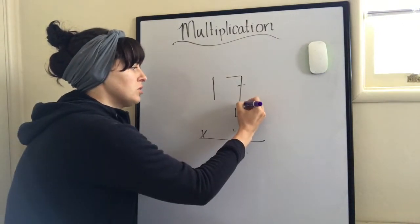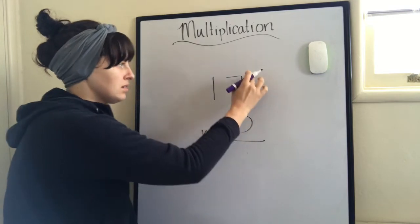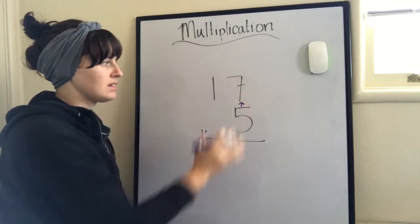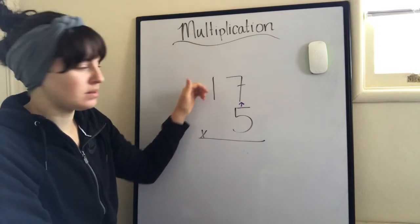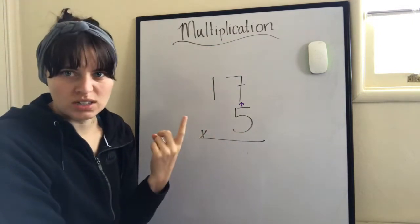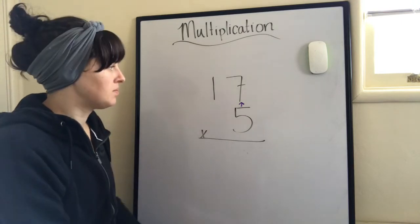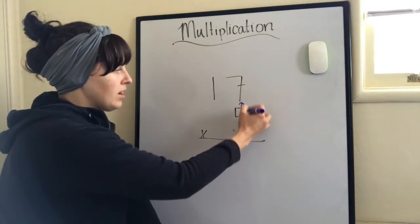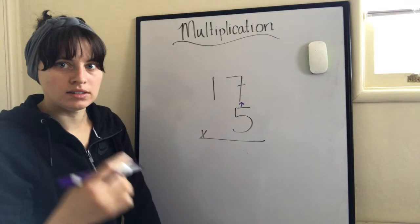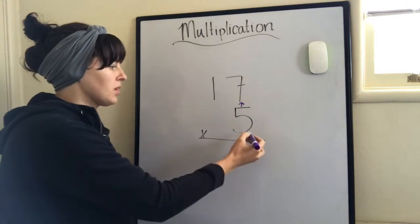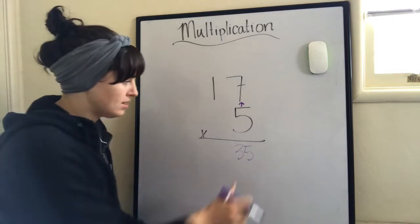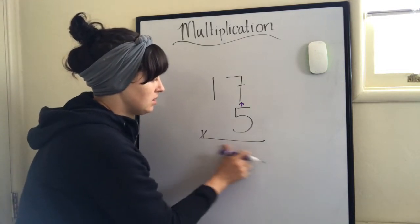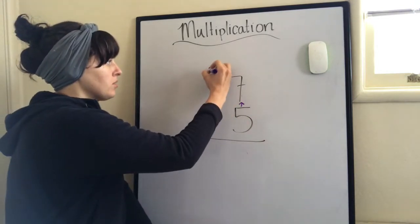So first we're doing the ones place. If we look at this number by itself, 17, 7 is in the ones place. The one is in the tens place. 5 is just one digit, so it's just the ones place. So first we multiply 5 times 7, which is 35. But we can't just write 35 in one spot. There's only one spot available. So we have to write the 3 up here. 35.